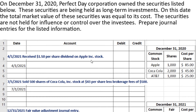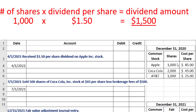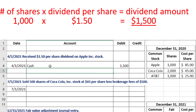The first journal entry on April 1, 2021 says that we received $1.50 per share dividend on Apple Inc. stock. If we look at our table, we see that we have 1,000 shares of Apple stock. So the dividend is going to be 1,000 shares multiplied by $1.50 per share, which equals $1,500. The company is going to be receiving $1,500 in cash, so we debit our cash account, and the credit we use here is dividend revenue.